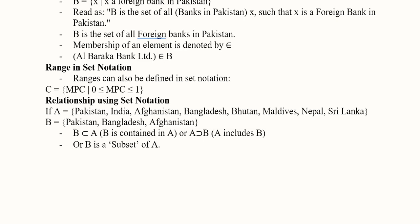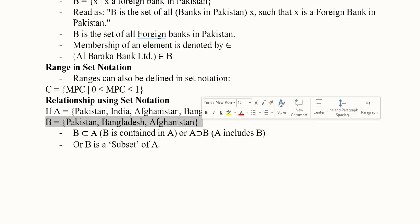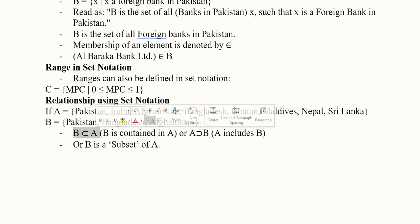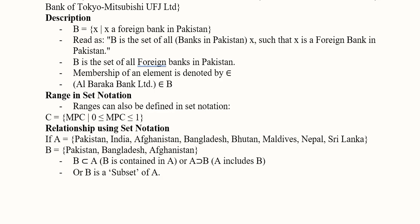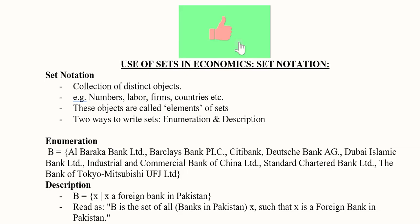We can also represent a relationship using set notation. Here we have two sets: A, containing a group of countries, and B, which contains a smaller group of countries. Since B is a smaller part of A, B is a subset of A — meaning B is contained in A, A contains B, or equivalently, B is a subset of A. This is how we can understand set notation and its usage in economics.